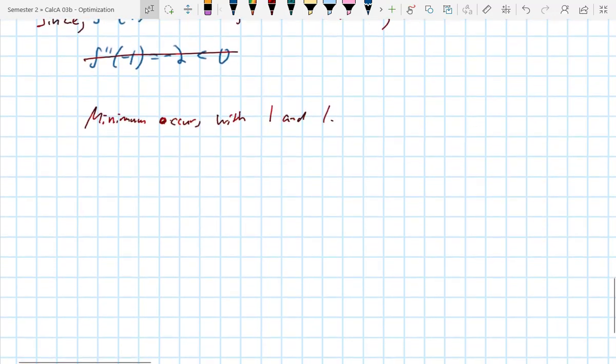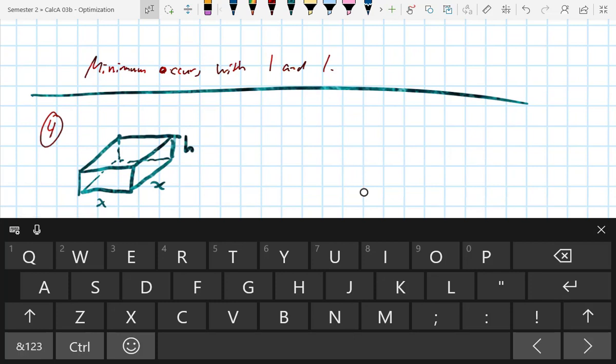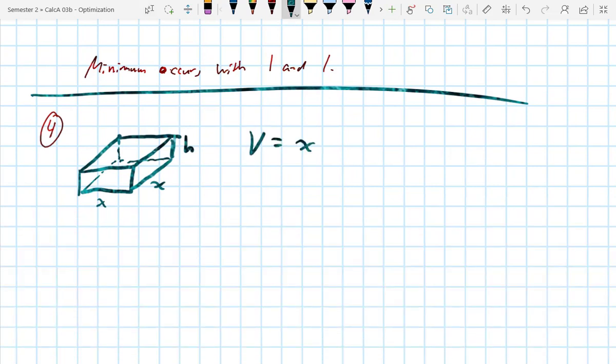We're going to skip to number 4, and we'll probably only have enough time to set it up if we do on that one. Design open box having a square base and a surface area of 108 square inches, so open top, open box. And it says it has a surface area of 108 square, okay, so square base. So we've got x, x, and h is the height.